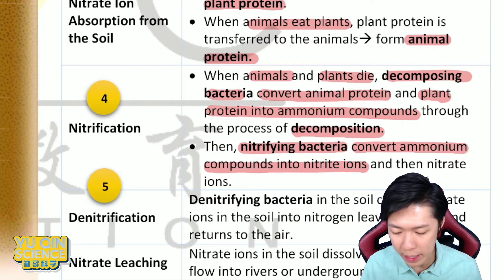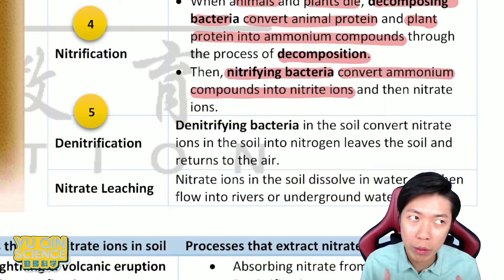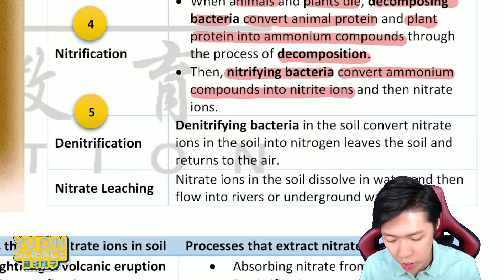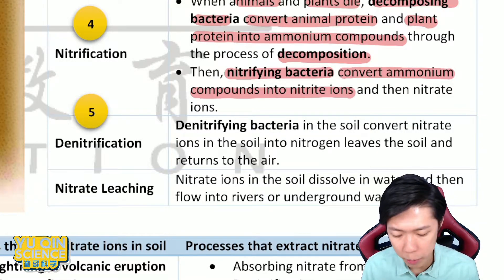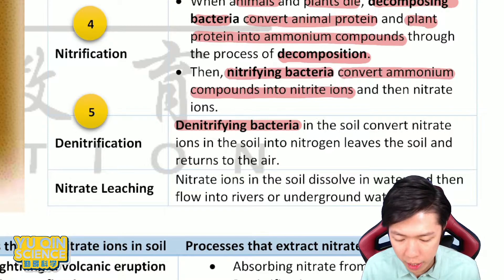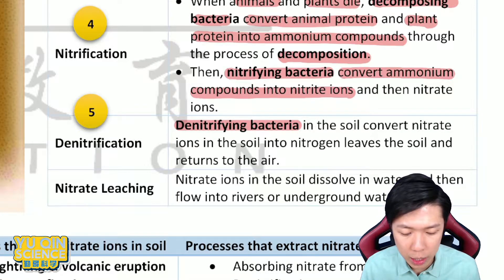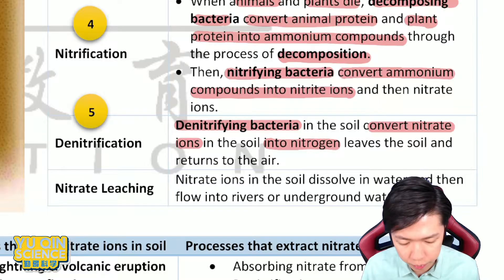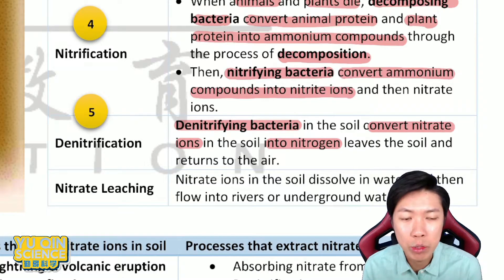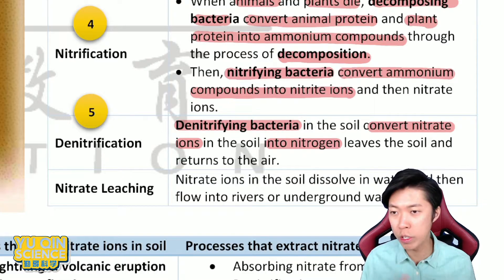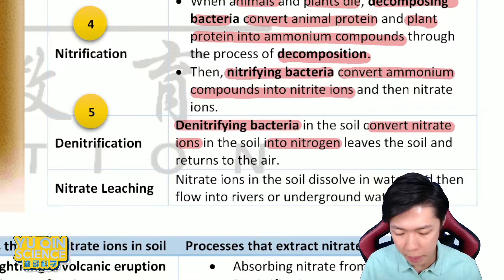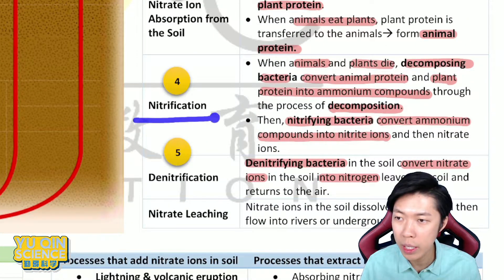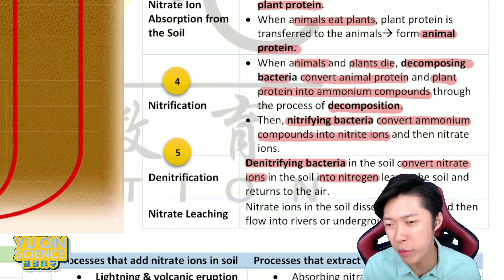It's a cycle, so nitrogen has to return to the atmosphere to maintain the percentage. Denitrification is the process name, done by denitrifying bacteria in the soil, to convert nitrate ions back into nitrogen gas, which returns to the air. The word is straightforward — nitrification becomes denitrification by just adding the prefix 'de'.